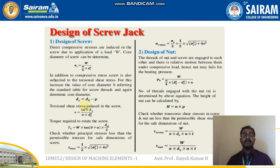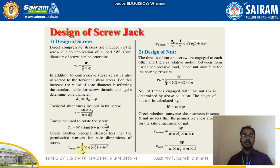The torsional shear stress induced in the screw is: τ = 16T1 / (π × DC³), where T1 = W × tan(φ + α) × DM/2. Check whether the principal stress is less than the permissible stress for safe dimensions of the screw. The maximum shear stress is: τ_max = ½ × √(σC² + 4τ²), and the maximum compressive stress is: σC_max = σC/2 + ½ × √(σC² + 4τ²).